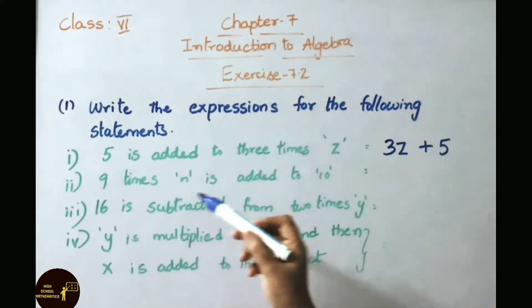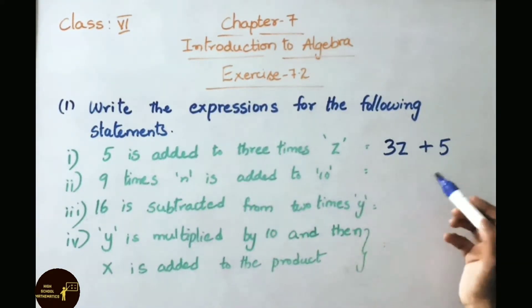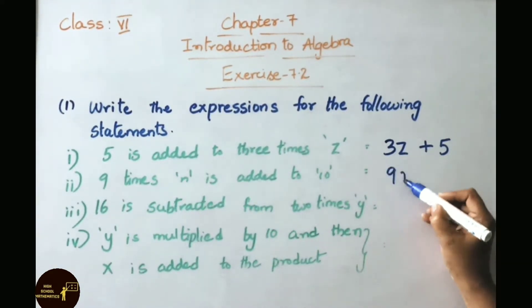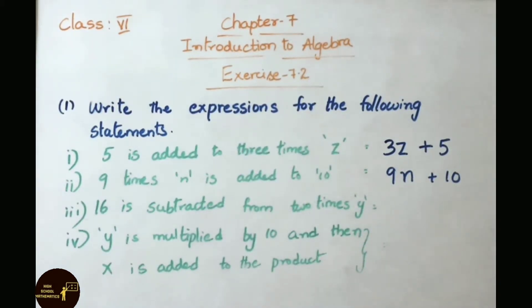See second one, 9 times N is added to 10. 9 times N is 9N. That is added to 10. So the rule is 9N plus 10.